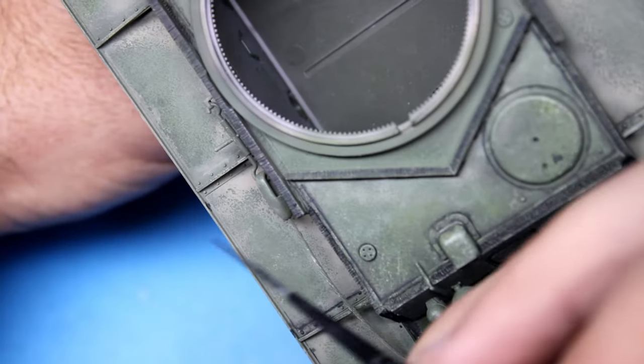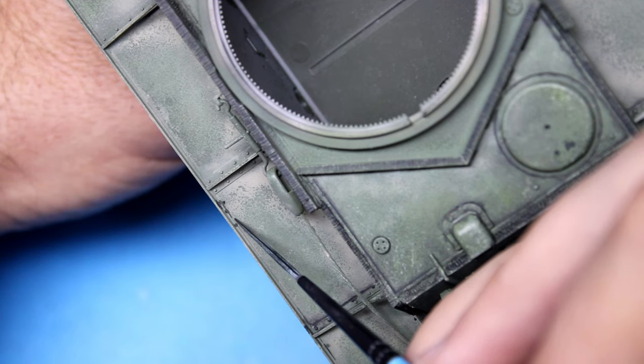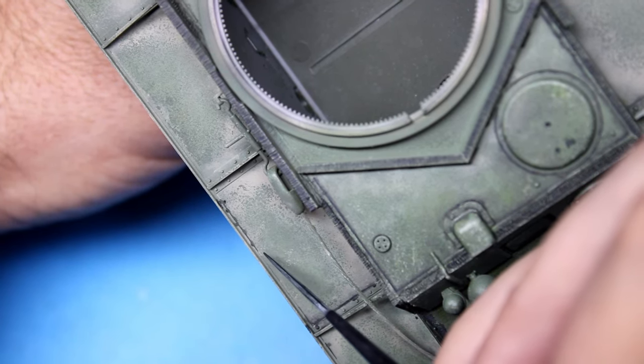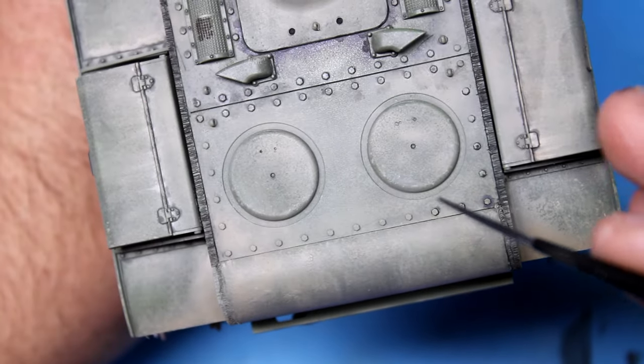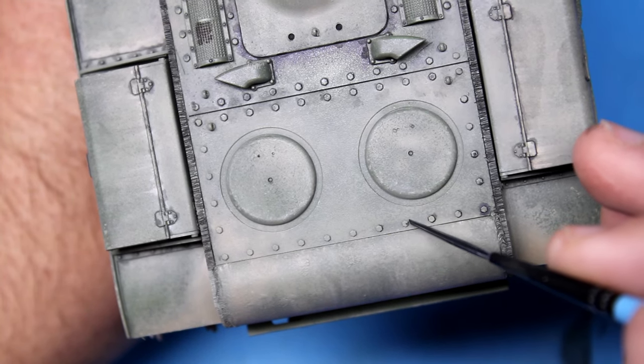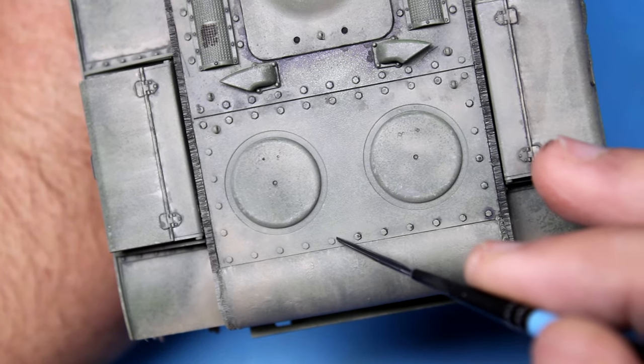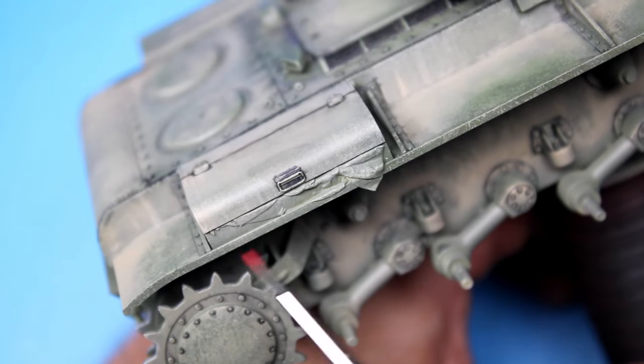To get a nice deep dark green color for the pin wash, I mixed Starship Filth and Field Green and then thinned it with enamel thinner. You'll know if you've used too much thinner because the wash will try to go everywhere and you'll know you haven't used enough because it just applies as an oil. Ideally, you want it to run freely through all the details on the kit. If your mixture is bang on, it'll do the work for you.